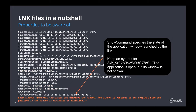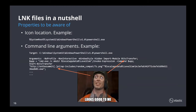Then we've got the show command, which specifies the state of the target application's window after the link file is executed. Keep an eye out for the ShowMinNoActive value — this means that the application window will be hidden from the victim when they click the link file, and this could be an indication of the attacker trying to hide their code execution. Finally, the icon location value specifies the path where the link file's icon is stored, and the command line arguments are executed with the link file's target when the link is clicked. In this example, the link file's target is PowerShell.exe, and we can see a script in the command line arguments being executed that imports the bits transfer module and reaches out to a URI to download a file called 7z.ping — this one looks really suspicious at first glance.